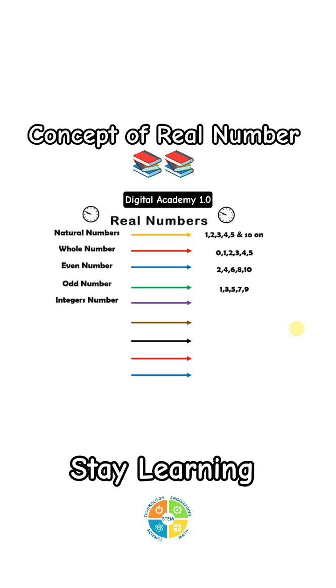Integer number. It consists of positive and negative numbers, generally represented by capital letter Z. For example, minus 3, minus 2, minus 1, 0, 1, 2, 3.